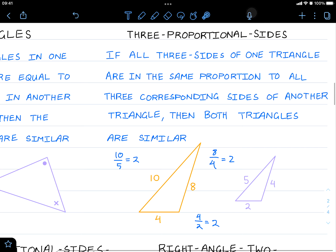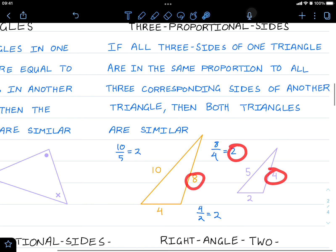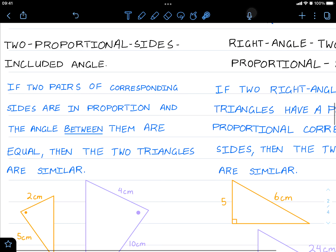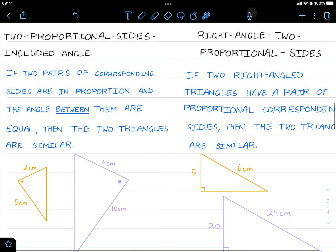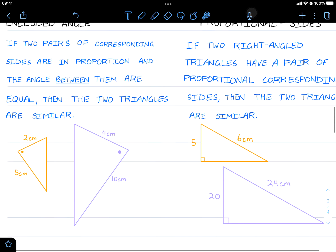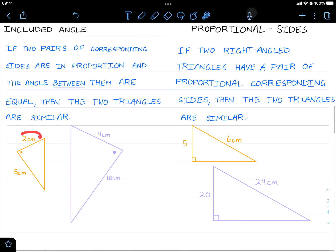If you have two triangles where every side is the same proportion, so for example 10 divided by 5 is 2, 8 divided by 4 is 2, and 4 divided by 2 is 2, then these two triangles are in proportion because they have the same scale factor for every side. If we have two proportional sides and an included angle, which means the angle in between them, then they are similar.